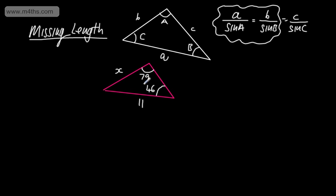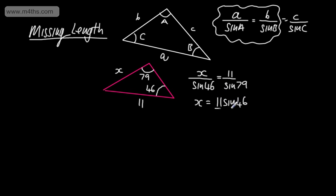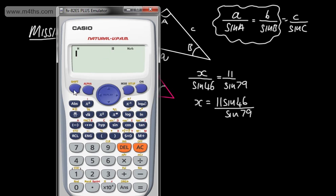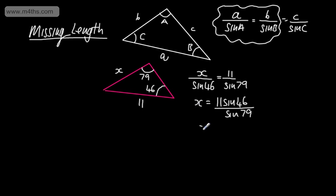A over sine A is equal to B over sine B. So I'm going to write X over sine 46 equals 11 over sine 79. The algebra from here is very straightforward — we simply multiply both sides by sine of 46. So 11 sine of 46 over sine of 79 will give us length X. We can use the calculator, checking it's in degrees mode. We write in 11 sine of 46 divided by sine of 79 degrees, and that gives me 8.06, so 8.1 centimeters to one decimal place.